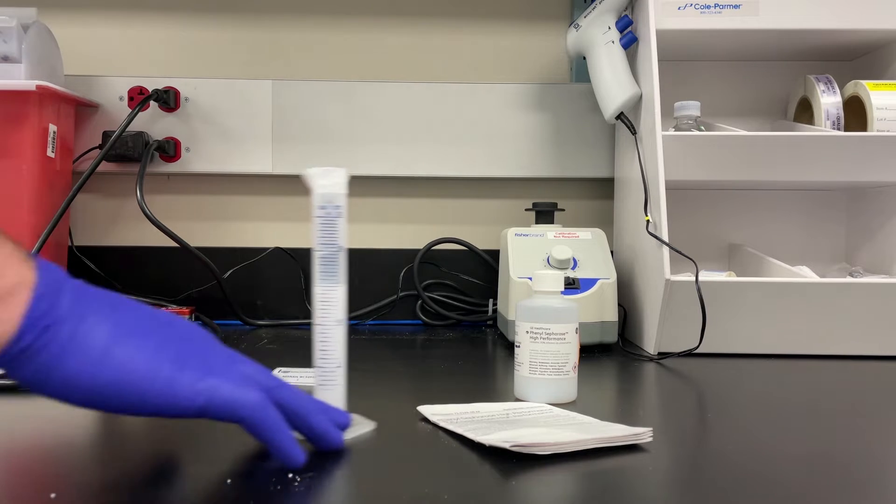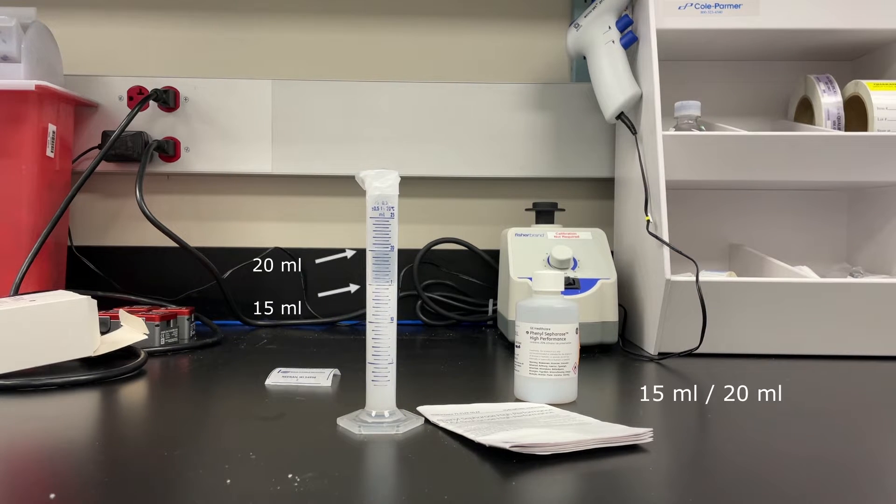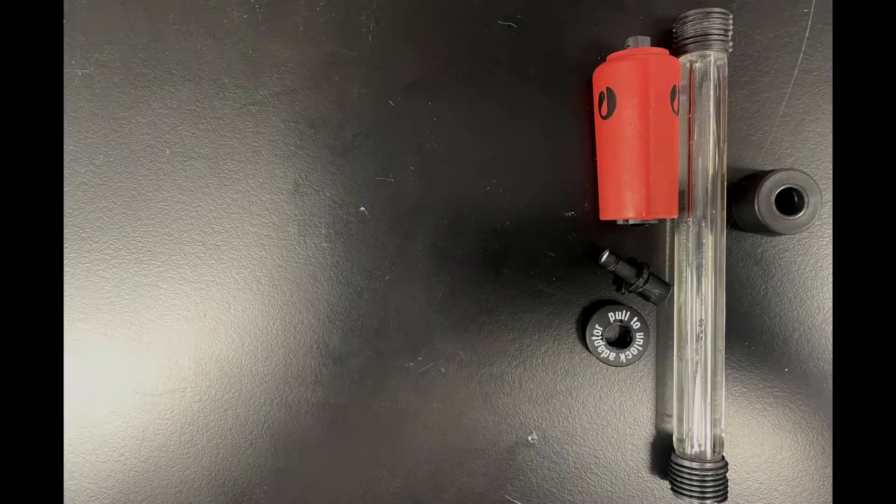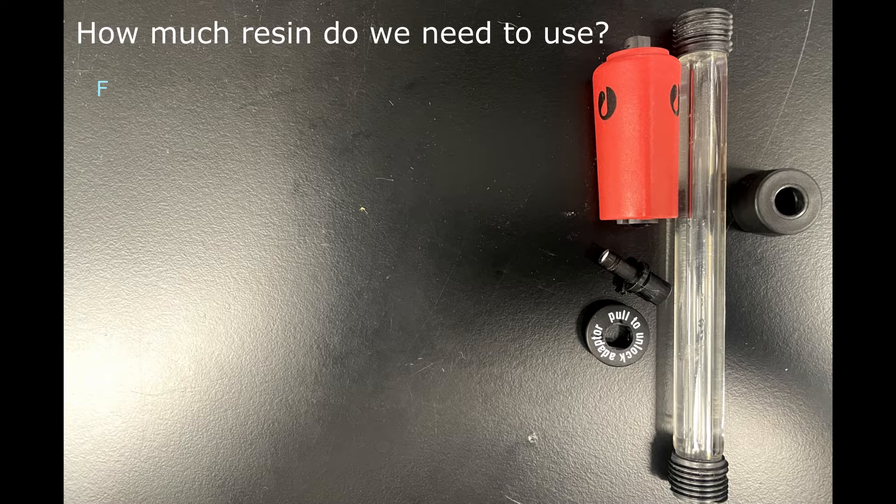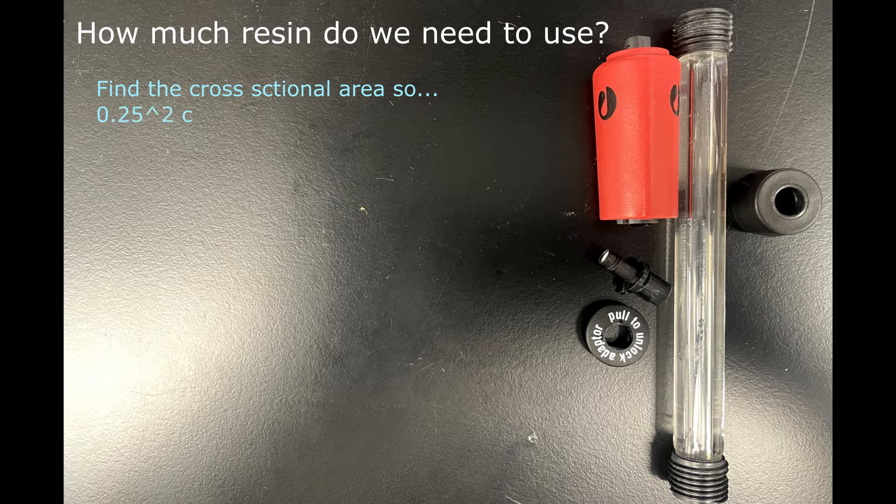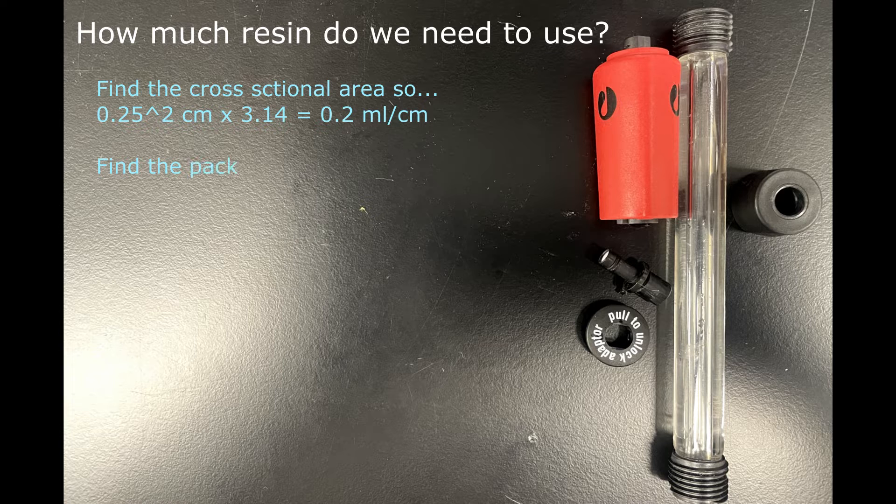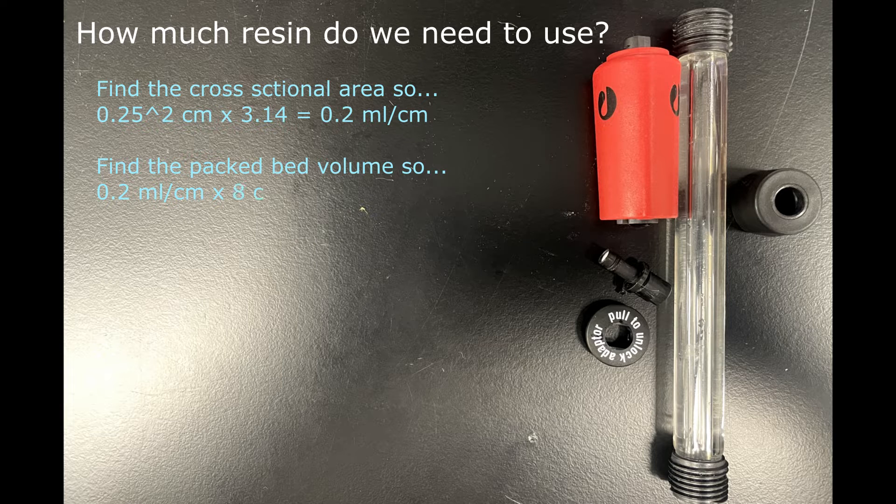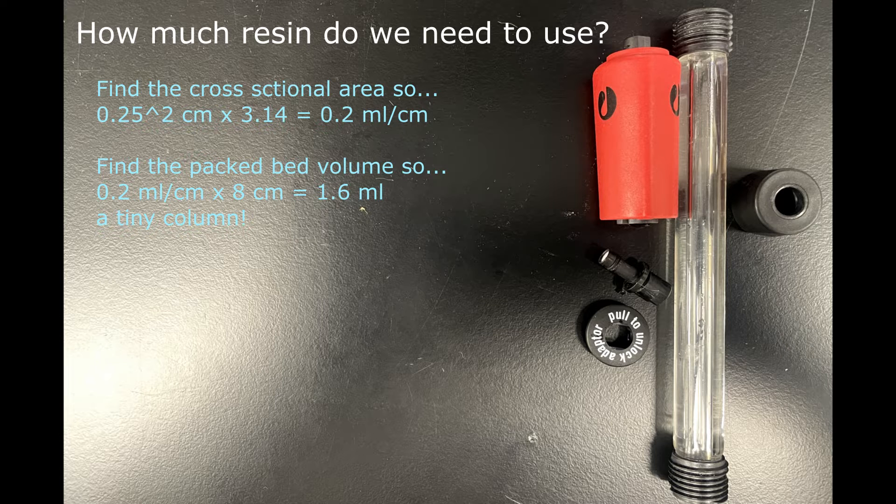Okay, the resin settled overnight. We ended up with the bed resting at 15 mils and the total volume in the cylinder is 20. That means we have a 75% slurry. Now we're going to find out how much slurry we need to use to pack this column. We're going to find the cross-sectional area to start, so we'll multiply the radius squared times pi for 0.2 mils per centimeter. We're going to take that and multiply it by the final packed bed volume we want, which is 8 centimeters in height, so the final packed bed volume is 1.6 mils. It's a pretty tiny column.